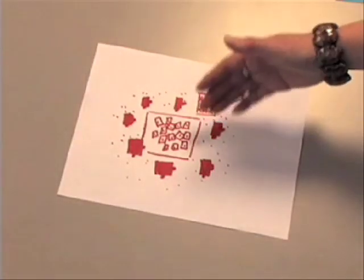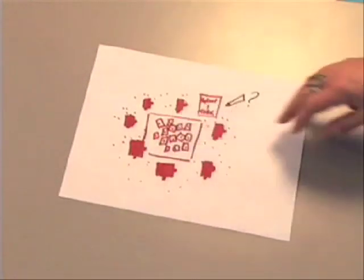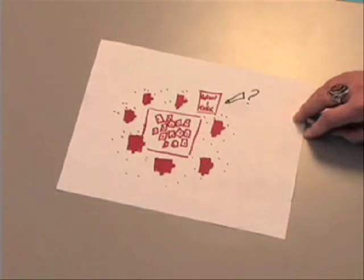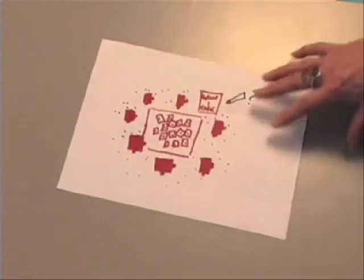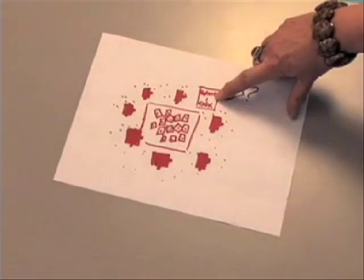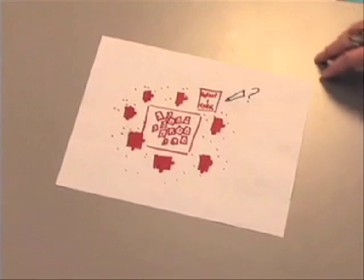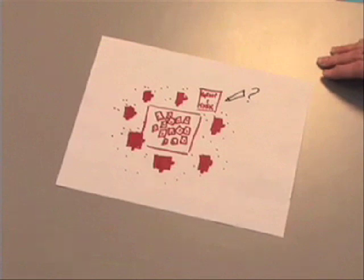At the corner locations, have a stack of handouts related to the corner group's piece of the content, enough for everyone in the whole class. As well, have one large sign explaining a task that the group will complete while in their corner. This task should engage the group in a discussion or application of their piece of the content to be sure that they comprehend it.